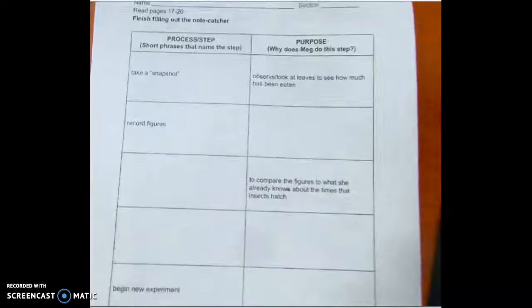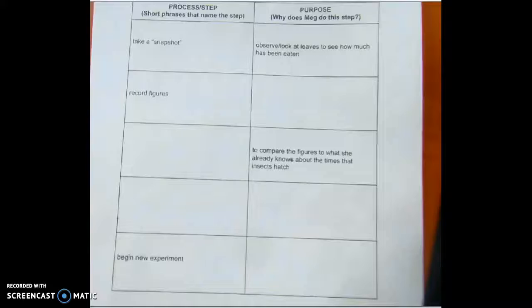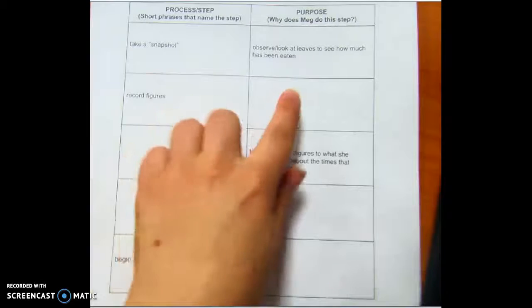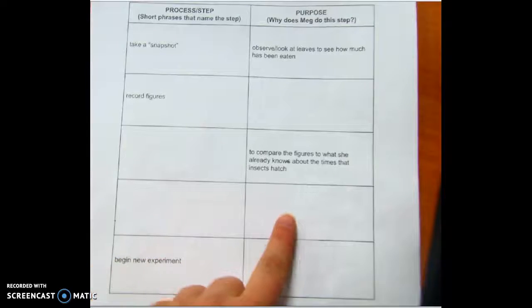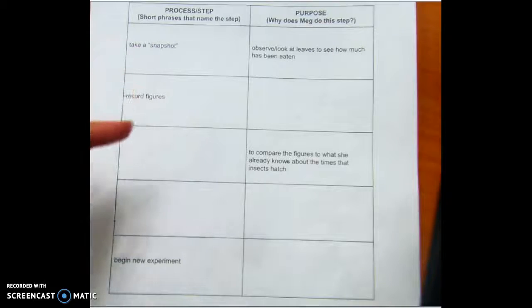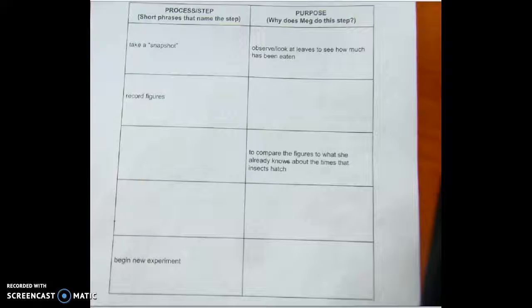You will notice that I left one entire step blank and then we have begin new experiment. You need to fill in the empty boxes looking for what is missing but also what is the natural progression for the steps. If you see a new sentence and it starts talking about something else, that's probably another step.